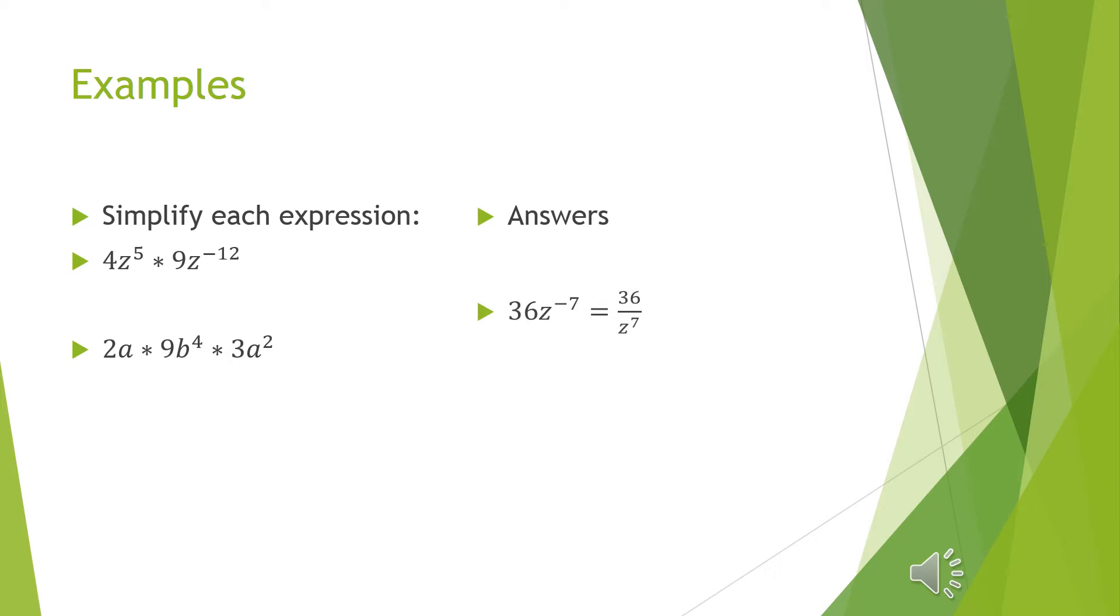But remember our rule that we cannot leave exponents negative. So we need to use our negative exponent rule that we learned in 7-1 and move it to the denominator of a fraction. So your answer is 36 over z to the 7th power.